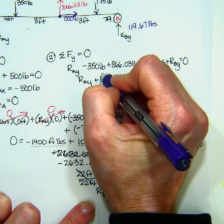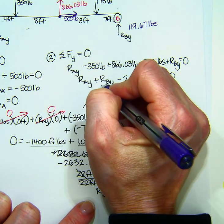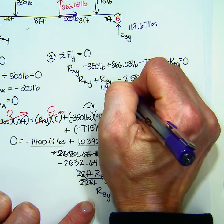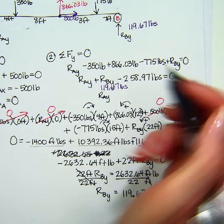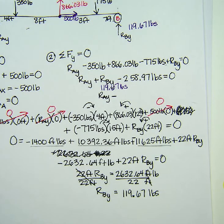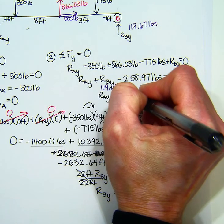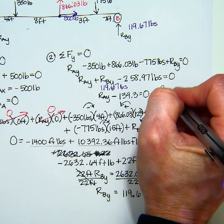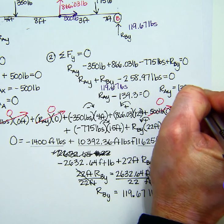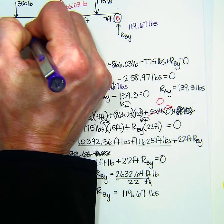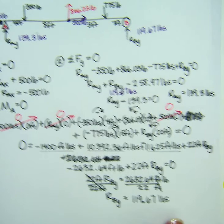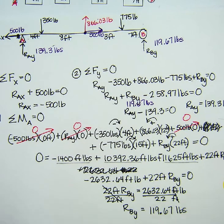And then I can plug that into this equation to figure out RAY. So when I move that over, I get RAY equals 139.3. Oops. Let's move that back over. So there is all of my scratch work.